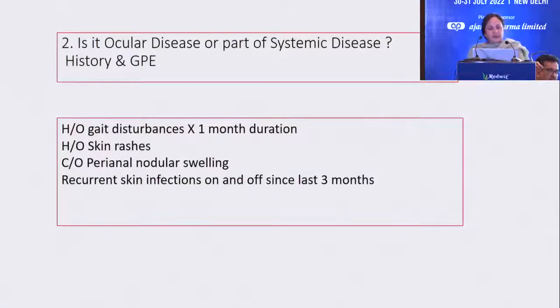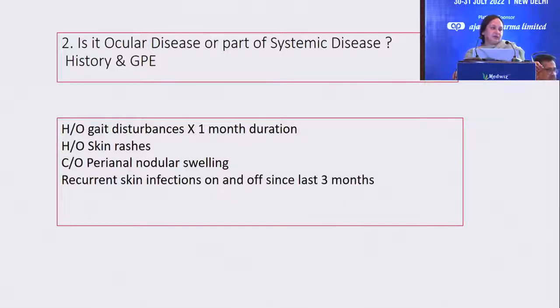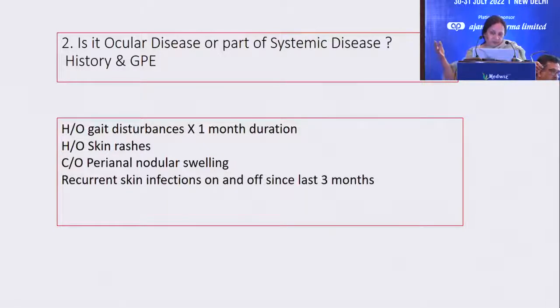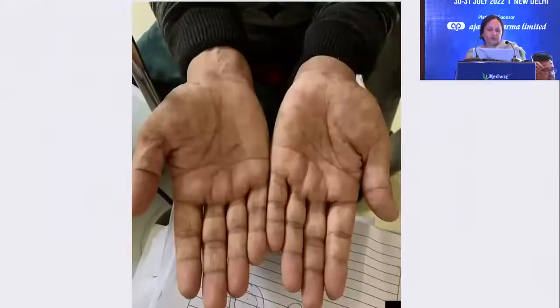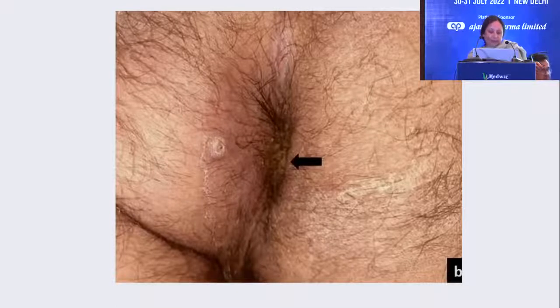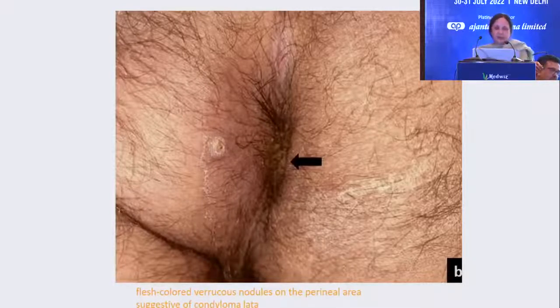Now the second question, which is very important: you know it's pan-uveitis, but is the disease confined only to the eye or is it part of some systemic disease? You don't need a very long uveitis clinic file. Just talk to the patient as you see the phenotype. The patient says he has had gait disturbances since last one month, some skin rash, perianal nodular swelling and recurrent skin infections he wasn't sure about. He had lesions on his hands and in his perianal region, which was diagnosed as condylomata later.